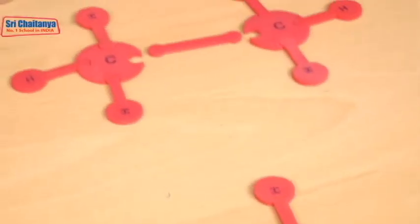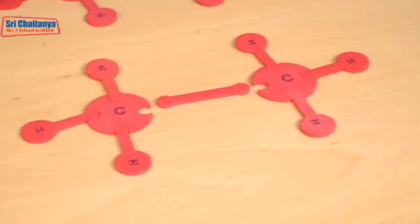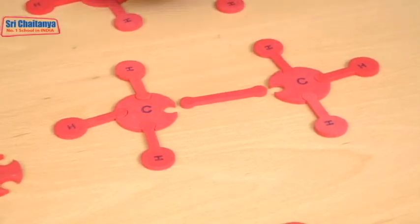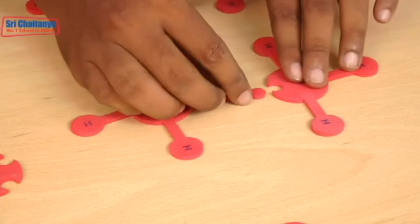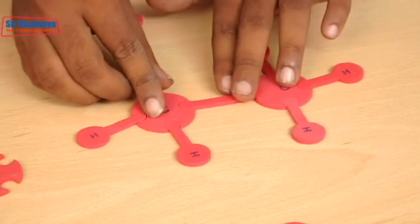Another example, C2H6. In that one carbon is bonded with another carbon atom and each carbon is bonded with 3 hydrogen atoms.